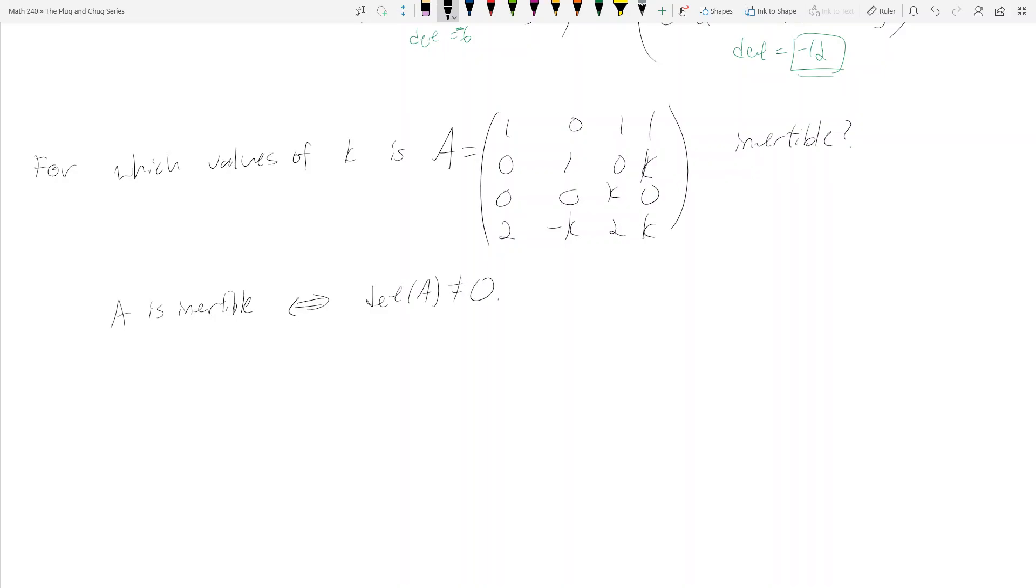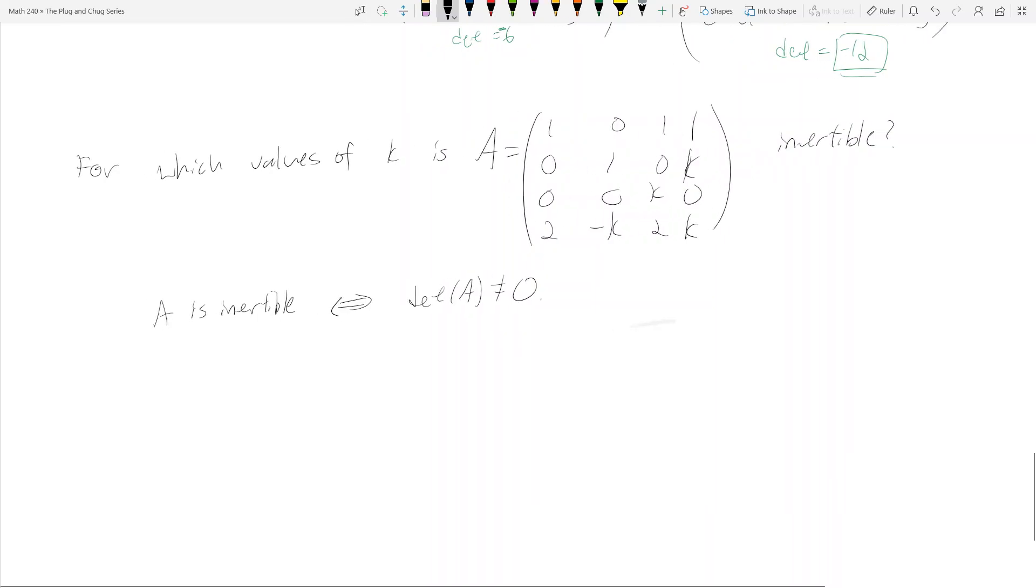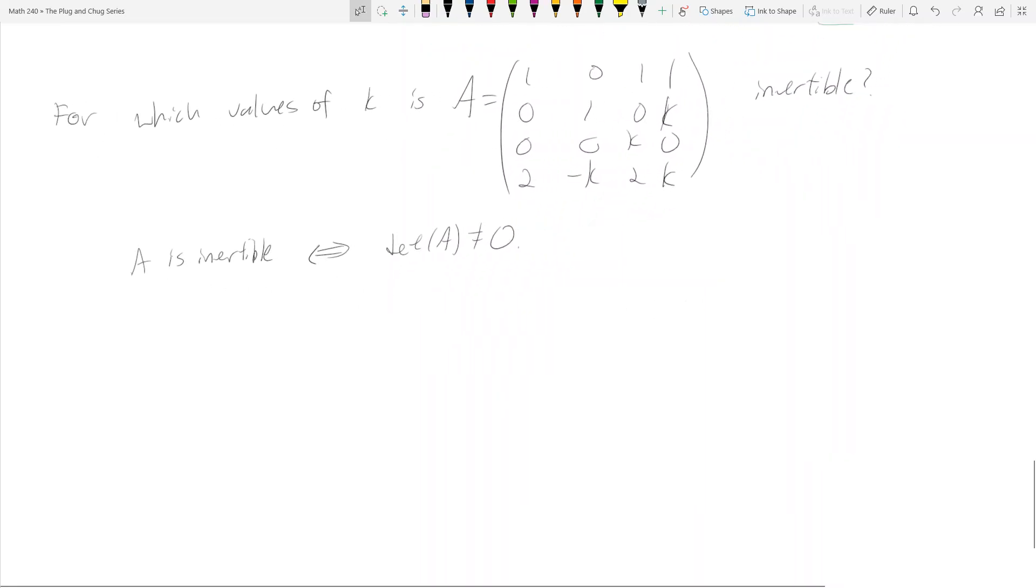So essentially what we need to do now is find the values of K that make this determinant nonzero. We have a 4x4. You can go through the previous videos and look at your favorite methods of taking determinants. What I'm going to do here is use the row reduction method to find the determinant of A.